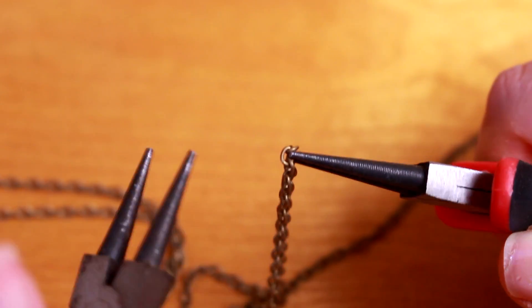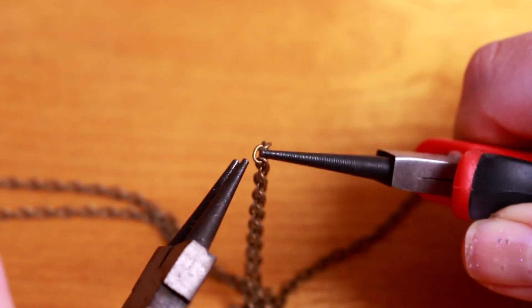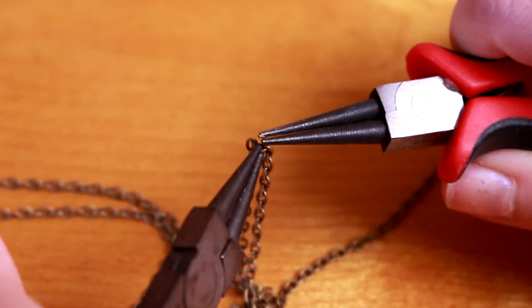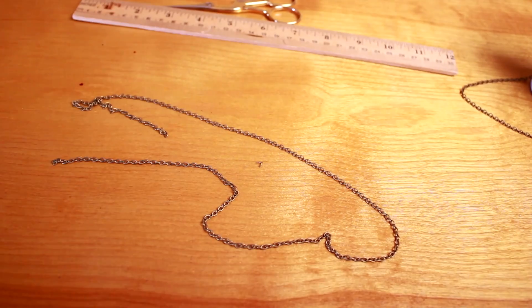If you're cutting the chain from a longer piece or a spool like this, all you have to do is measure out the length, pick out one of the teeny tiny links, twist it open with some jewelry pliers, and bam! A nice clean length of chain.